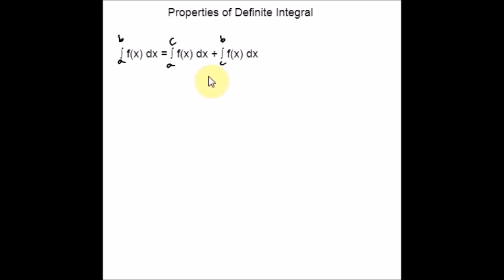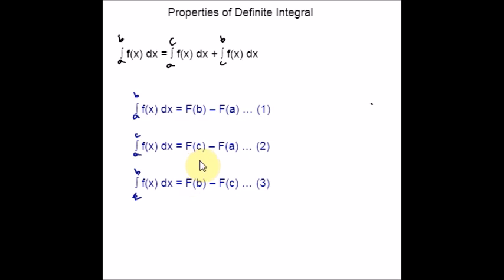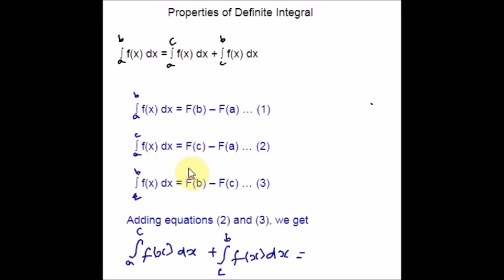Here is the third property. Capital F is the antiderivative of f. By using the Second Fundamental Theorem of Calculus, I apply it for the intervals a to b, a to c, and c to b separately, marking each as equations 1, 2, and 3. Adding equations 2 and 3, the left sides give us the sum of the two integrals. On the right side, F(c) and F(c) cancel out, leaving F(b) − F(a), which is nothing but the left side of equation 1 according to the Fundamental Theorem of Calculus. That's it for property number 3.